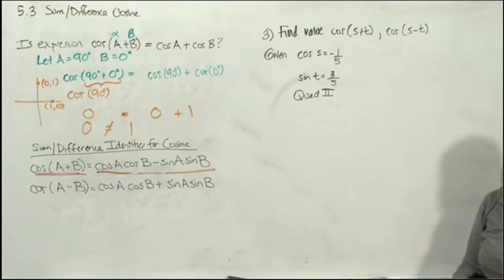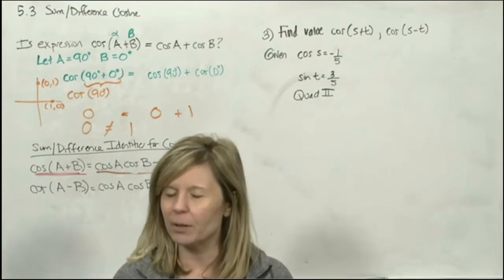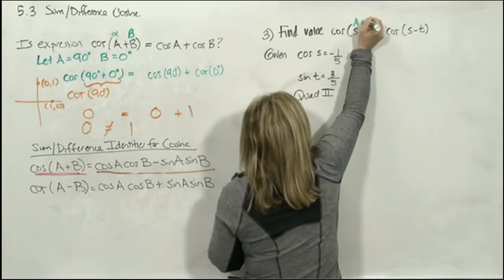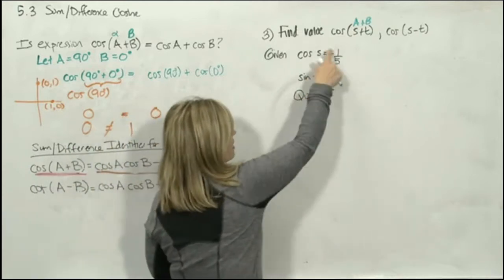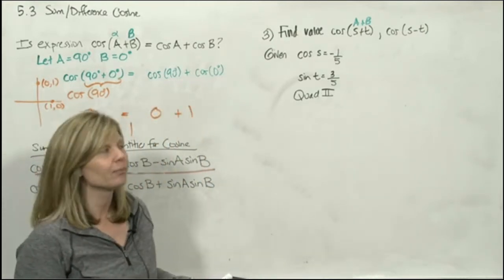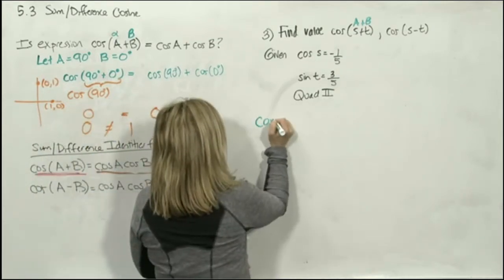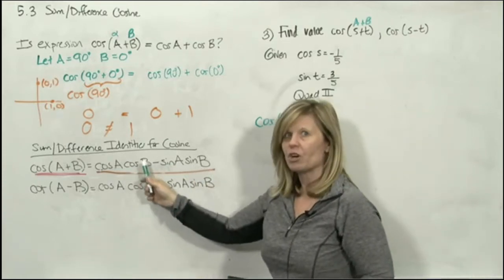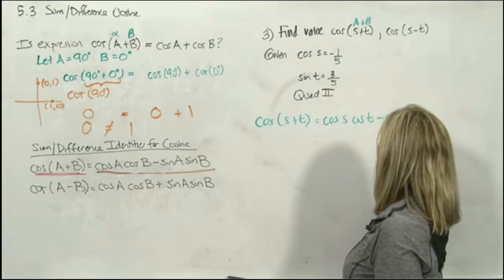We're going to find cosine(s + t). Using the identity: cosine(s + t) = cosine(s) · cosine(t) − sine(s) · sine(t). This is different from previous examples because we don't know the angle measurements — no degrees, no radians. You can't replace s or t because you don't know the angle. But that's okay. Trig is a relationship between an acute angle and two sides of a right triangle, and they give us enough information to draw right triangles.